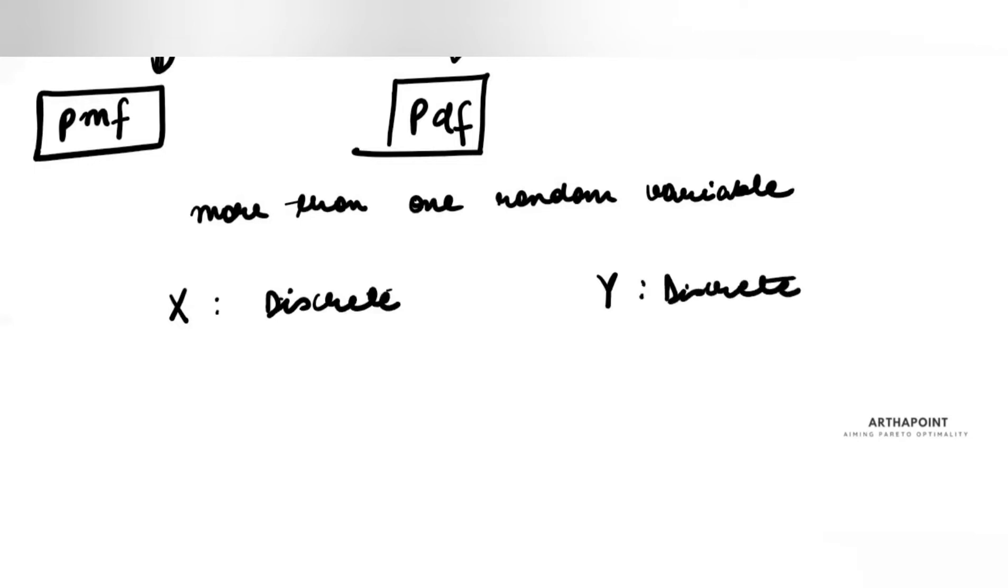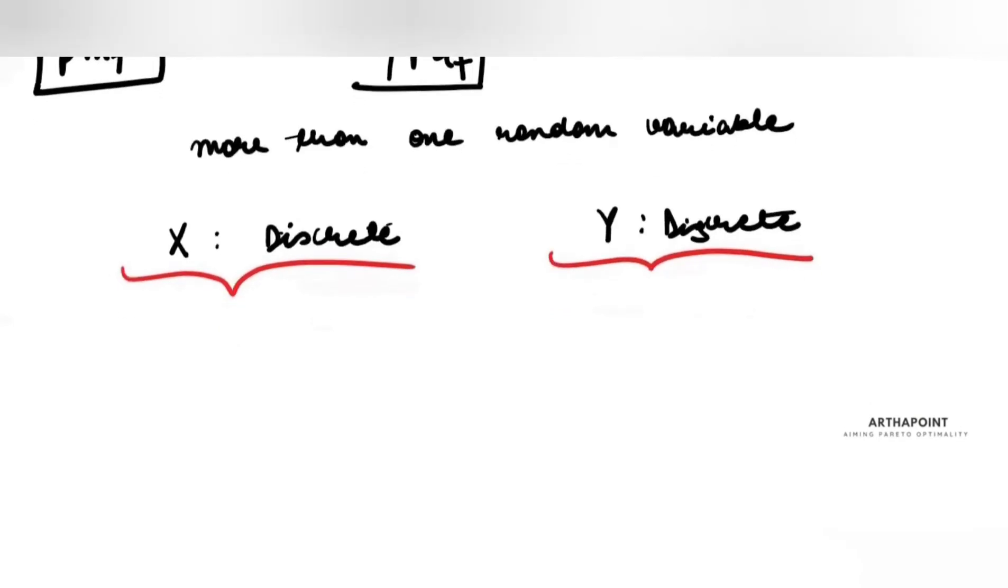I have two random variables X and Y. Both of them are discrete random variables. Each of them has their own probability mass function or probability density function, depending on whether it is continuous or discrete.